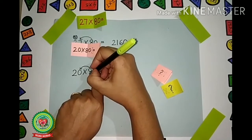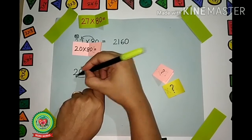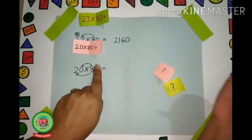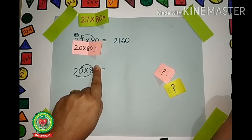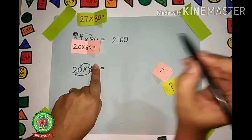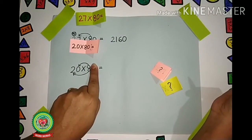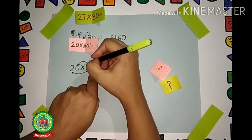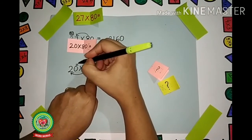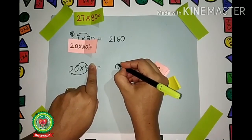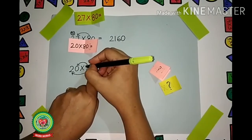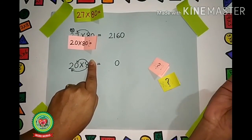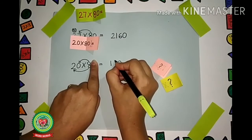First digit from the right hand side, then we will multiply 8 with the next digit. Remember, as I told you in our last video, anything multiplied by 0 is always 0. So 8 × 0 is 0. Next is 8 × 2. Read the table of 8 till 2. 8 × 2 are 16. Write 16 over here.